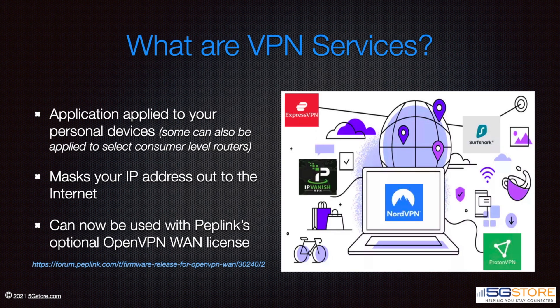There's one more thing we want to clarify. As common as hacking is these days, there are several VPN services you can pay for that advertise they'll protect your internet traffic. Along with features like content blocking, the VPN service masks your IP address with a random one from their servers providing you a secure connection. Services like these usually consist of a program you can download onto your computer, mobile device, and in some cases your router. Until PepLink released firmware 8.1.1, this was not supported. Now users have the option to purchase an OpenVPN WAN license, but it will still require the use of a third party for the OpenVPN access.